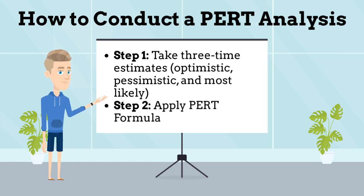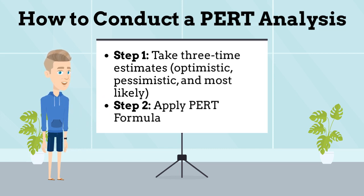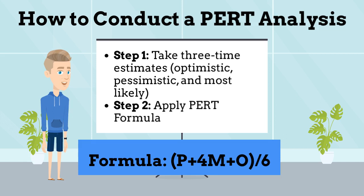The second step is where you take each of those estimates and plug them into the PERT formula. The formula is: P plus 4M plus O, divided by 6. The result from the formula will be your minimum time to complete a project.